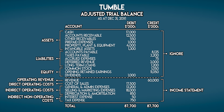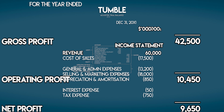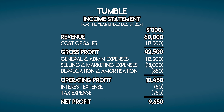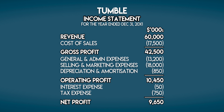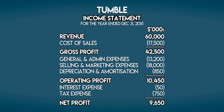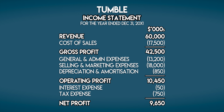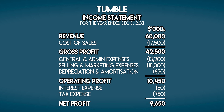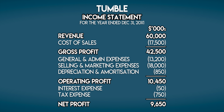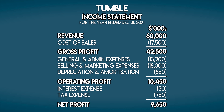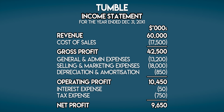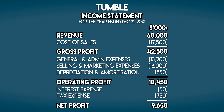That's the hard bit out of the way. All we need to do now is lift these numbers out of the adjusted trial balance and put them in the corresponding sections of the income statement. That leaves us with revenue of $60 million, less $17.5 million in cost of sales, which is a direct operating cost, giving us a gross profit of $42.5 million. Then we deduct indirect operating costs to reach an operating profit of $10,450,000. And below that, we subtract the indirect non-operating costs — interest and tax — which leaves Tumble with a net profit of $9,650,000 on the bottom line.